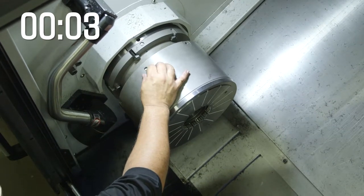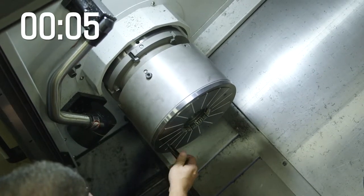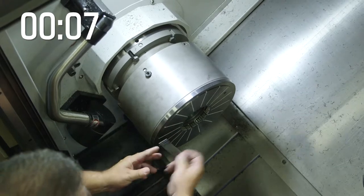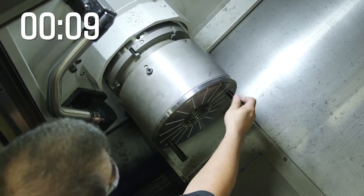First we remove the retention knob on the collet to allow it to freely move. We put in the collet change handle.